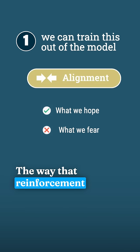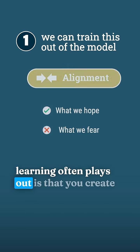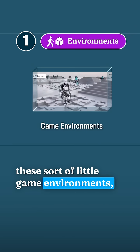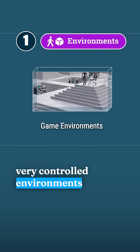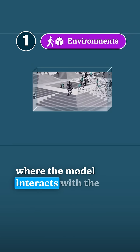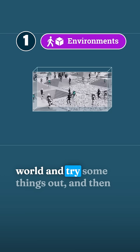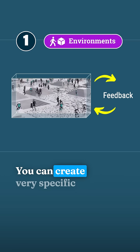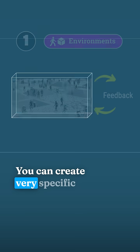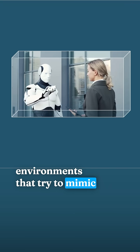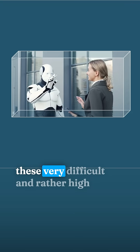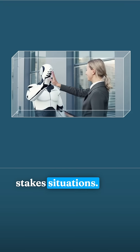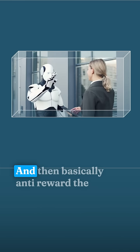The way that reinforcement learning often plays out is that you create these sort of little game environments — very controlled environments — where the model interacts with the world and tries some things out, and then it gets feedback. You can create very specific environments that try to mimic these very difficult and rather high-stakes situations.